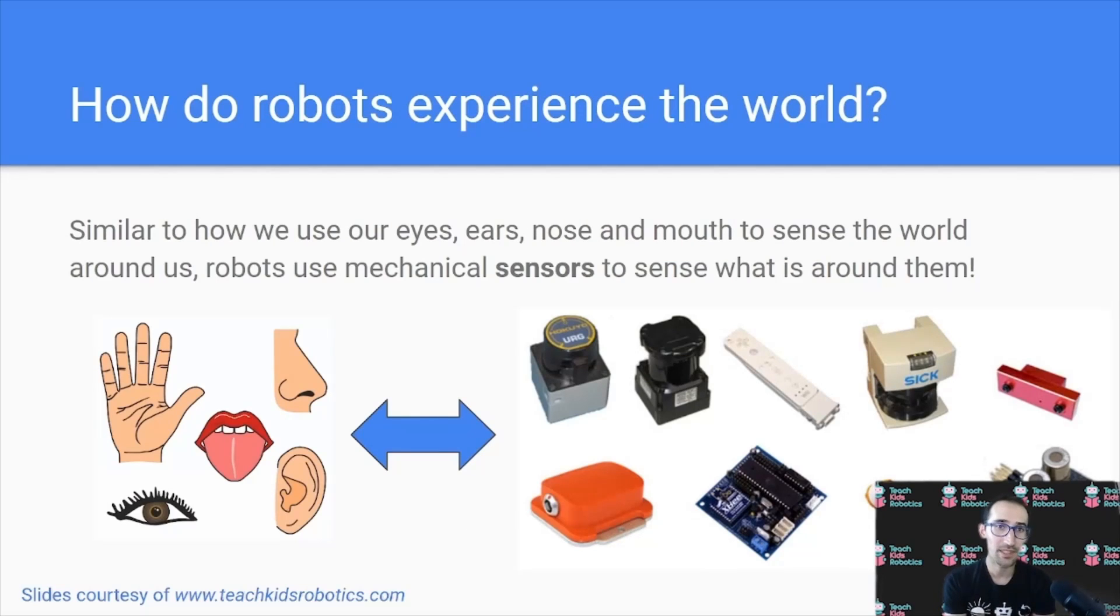The same way humans have eyes, ears, nose, and mouth, which allow us to sense specific things about the world around us, robots use mechanical sensors to sense what is around them. Now there are equivalents here. For example, for an eye, a robot can use a camera. For a mouth, a robot could use a gas sensor. For feeling, a robot can use tactile pressure sensors. For hearing, a robot can use a microphone. Depending on the goal of the robot, specific sensors are used to understand the environment it's operating in to achieve that task.